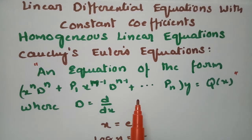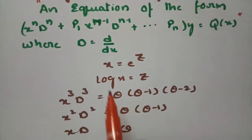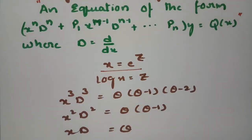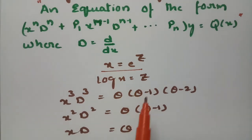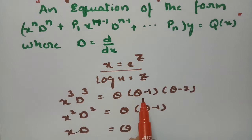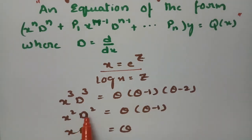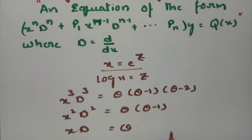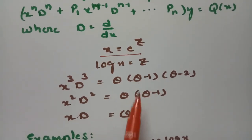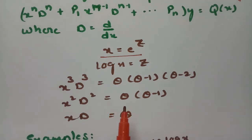This Cauchy's Euler equation can be transformed into a linear equation with constant coefficients using a small substitution. In place of x we write e^z, so log(x) = z. With this substitution: x³D³ is replaced by θ(θ-1)(θ-2), x²D² equals θ(θ-1), and xD equals θ.